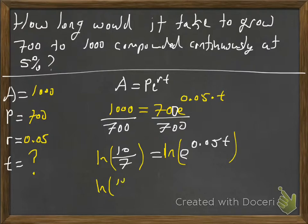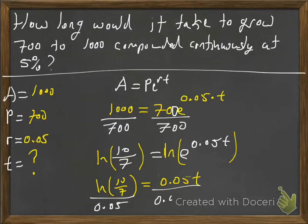So we have the ln of ten over seven is equal to 0.05t, and we'll just divide both sides by the 0.05—not the t, sorry, just the 0.05—and the t is equal to ln of ten over seven divided by 0.05.